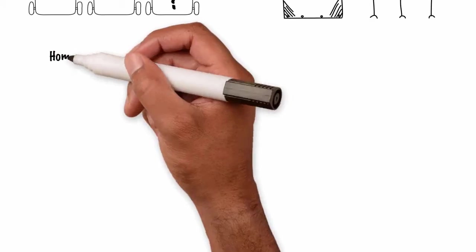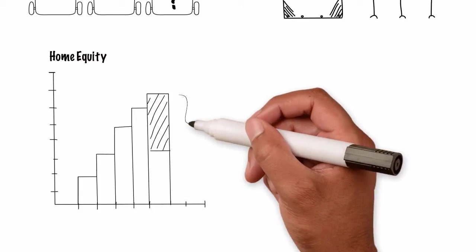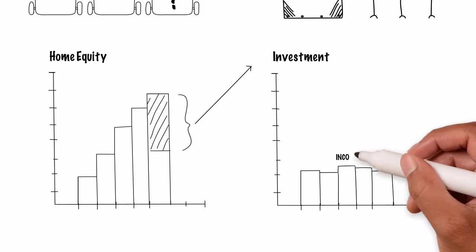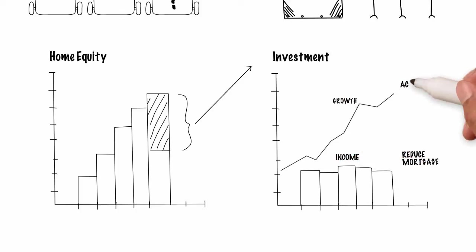As equity is built up in their home, funds are redrawn and invested. Income from these investments can be used to further reduce the mortgage balance while the growth component contributes to wealth accumulation.